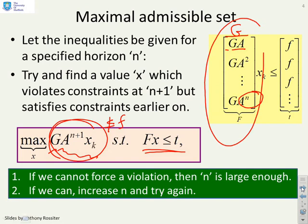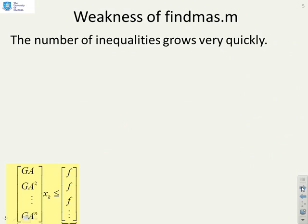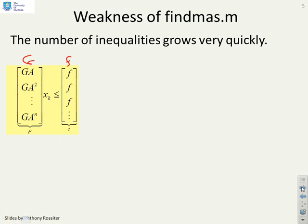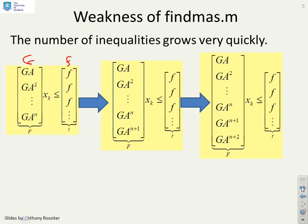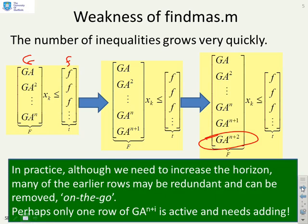That was your basic maximal admissible set. But the problem is, within here, you could have a lot of redundancy, which means many rows might not be needed. The number of inequalities can grow very quickly with n. The basic algorithm starts with horizon n, then might go to n+1, then n+2, and so on. Every time you increase n, you're adding extra inequalities. If G had 10 rows, every time you increase the horizon you've added another 10 inequalities. In practice, although we need to increase the horizon, many of the earlier rows are redundant.